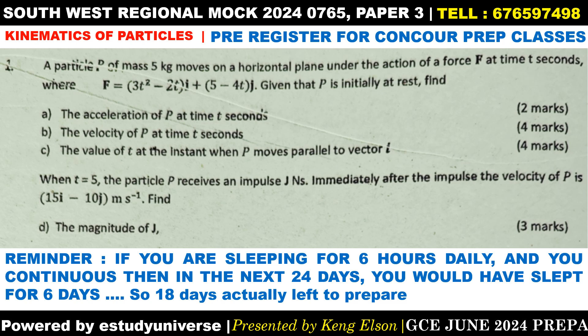Given that the particle P is initially at rest, find the acceleration, the velocity, and the value of t at the instant when the particle moves parallel to the vector i. When t is 5, the particle receives an impulse of J newton seconds; immediately after the impulse the velocity of P is 15i minus 10j — find the magnitude of the impulse. This was one of the easiest questions on the paper, straight to the point, so let's get started.